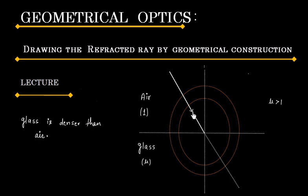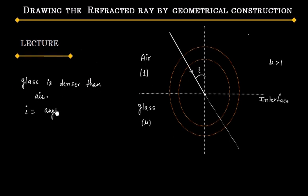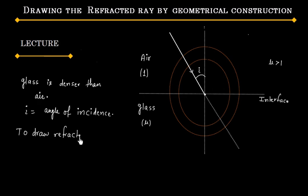This is the incident ray, and this is the interface. Let us say the incident angle is i, so i is the angle of incidence. We want to draw the refracted ray — that is our task.